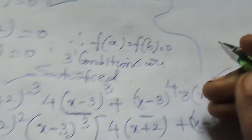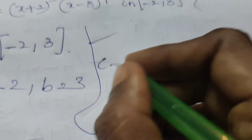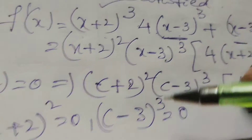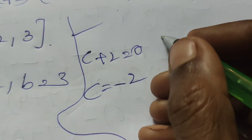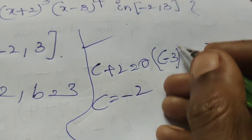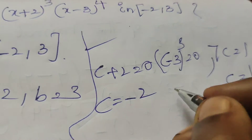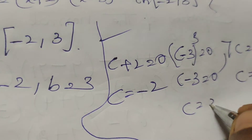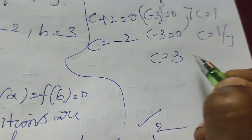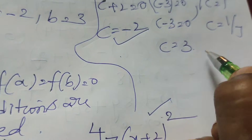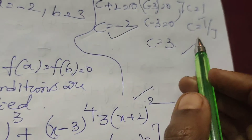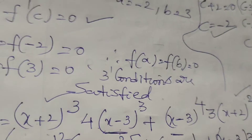From (c+2)² = 0, we get c = -2. From (c-3)³ = 0, we get c = 3. So the three values are c = -2, c = 3, and c = 1/7.